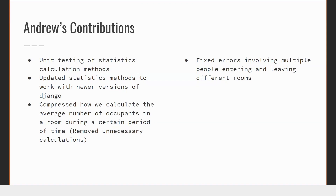I'm Andrew. I worked a lot on debugging the statistics portion of the web app, specifically how we were calculating certain statistics such as the total number of occupants in a room or the average time a room was occupied. At the start of the semester I updated some of those methods to work with newer versions of Django. I also made the calculation of average occupancy time more efficient, removed unnecessary calculations, and fixed errors with multiple people entering and leaving rooms.